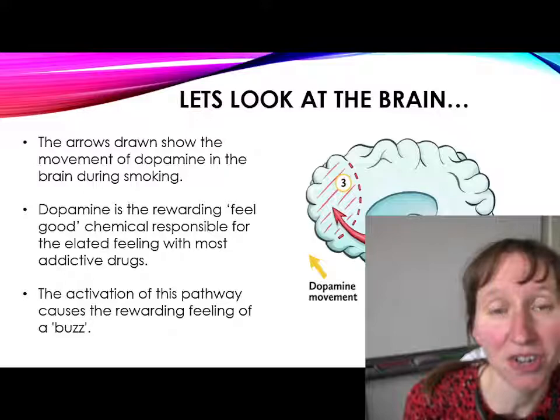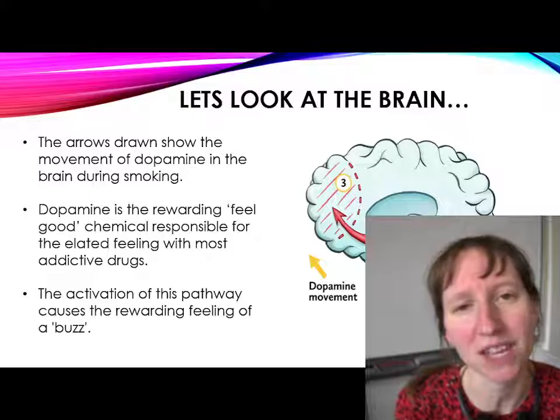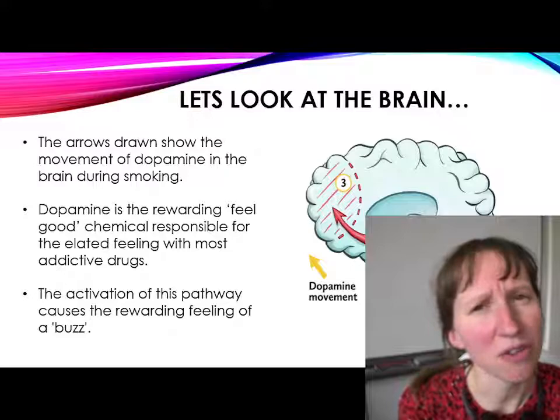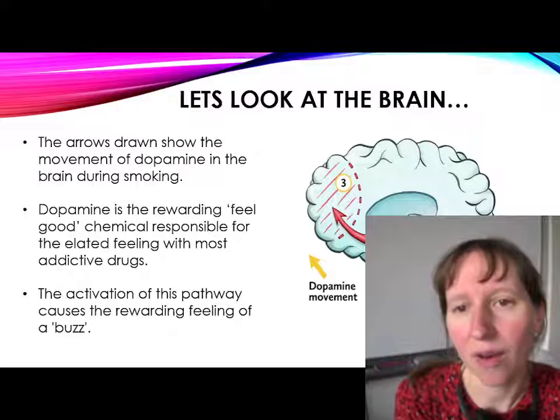The second way that the biological approach explains the start of smoking is basically that when we smoke, it gives us this big rush of pleasure in our brain. You might have heard people describe that as a bit of a buzz when they smoke. And that's a physical process in our brain that's quite addictive from really early on when someone starts smoking, which then hooks them into an addiction.